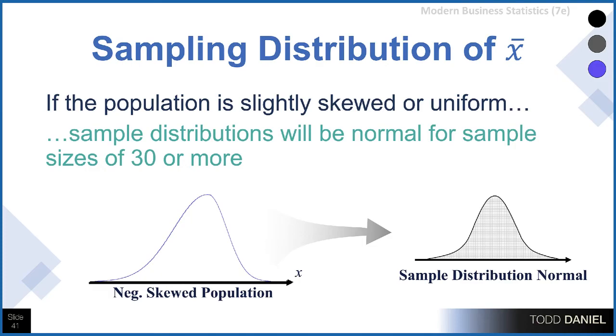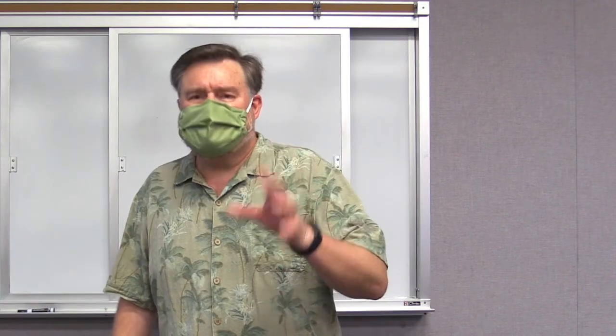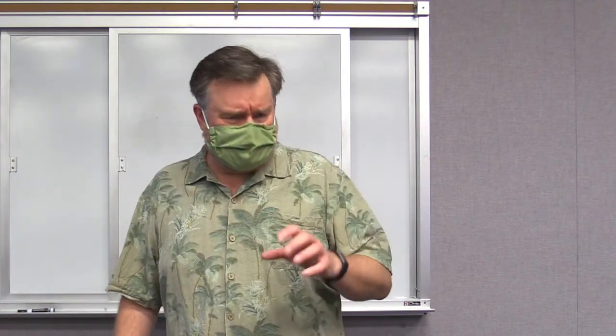And this is one reason why you will see the sample size of 30 recommended so frequently. No matter the skewness or the distribution of your population, if you have sample sizes greater than 30, you have minimized sampling error to the degree that the sampling distribution of the means will be normally distributed.